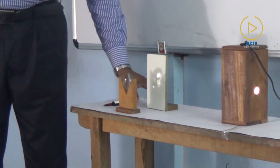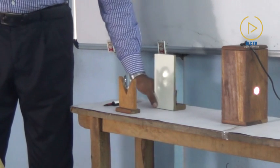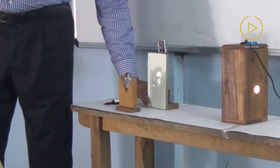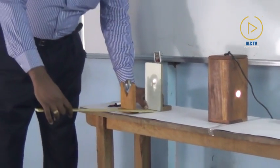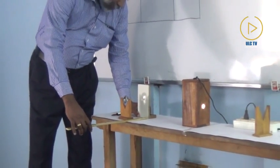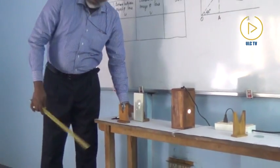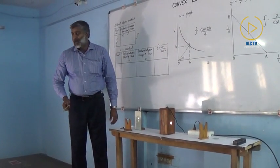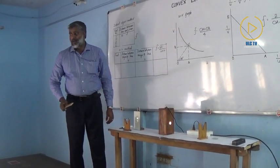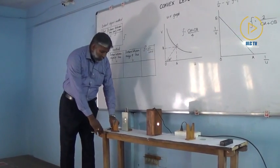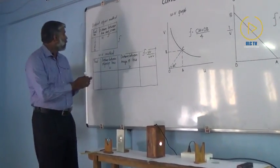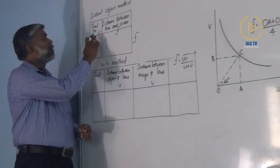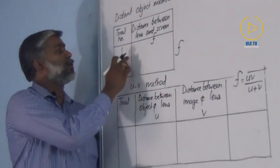This is trial number one. Then I can adjust the screen again. Again I am getting a clear image and the distance is measured. It is again 10. So this way five trials are taken. This method of calculating focal length is known as the distant object method.